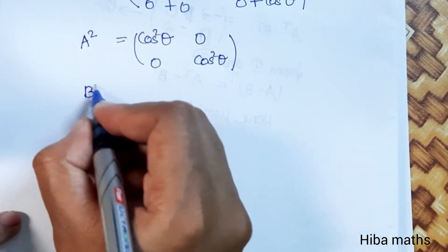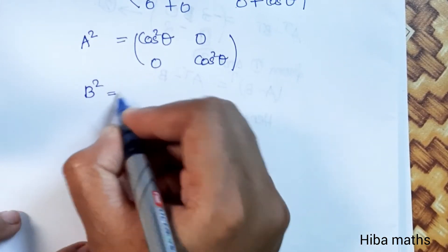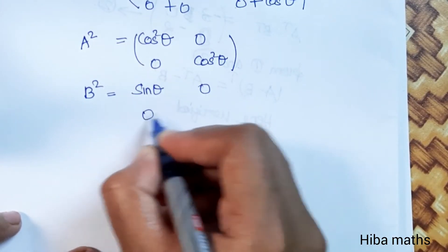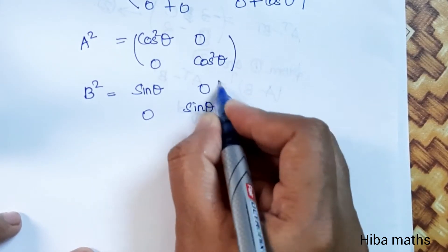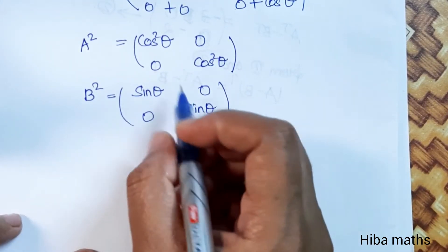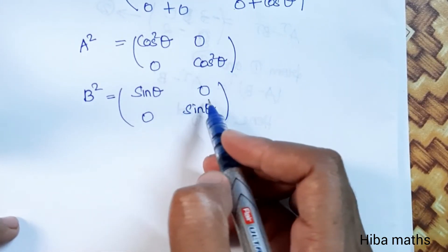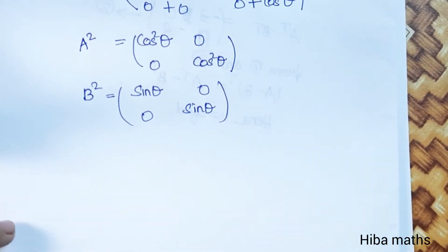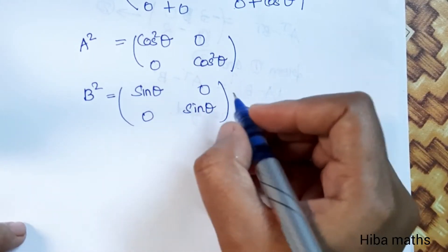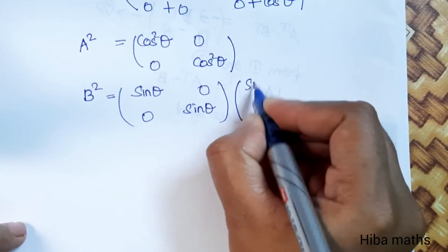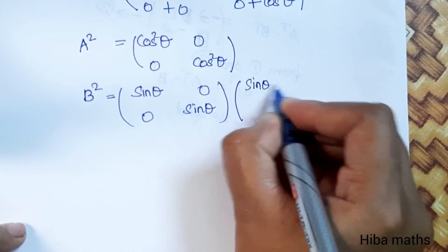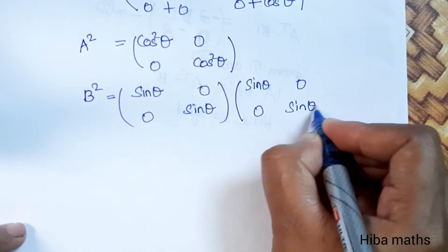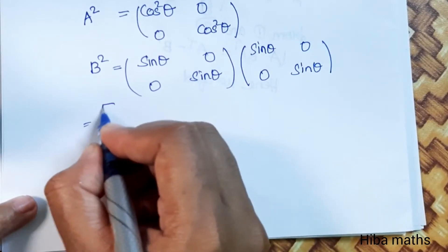Now we find B squared. B squared equals B into B, which is [sin theta, 0; 0, sin theta] multiplied by [sin theta, 0; 0, sin theta]. Following the same row-column procedure: sin theta into sin theta gives sin squared theta, and the answer will be [sin squared theta, 0; 0, sin squared theta].